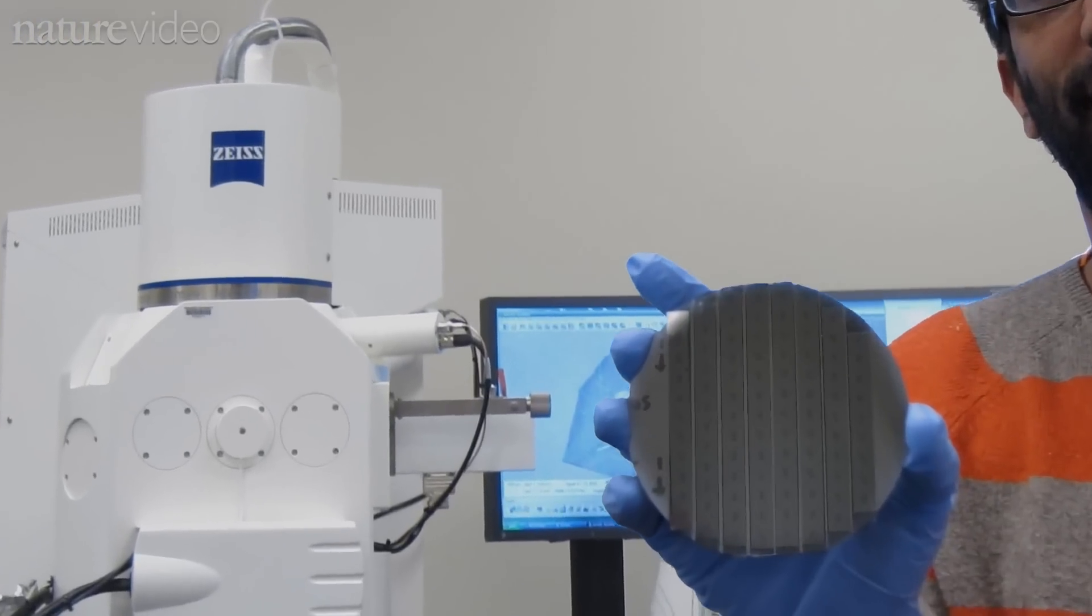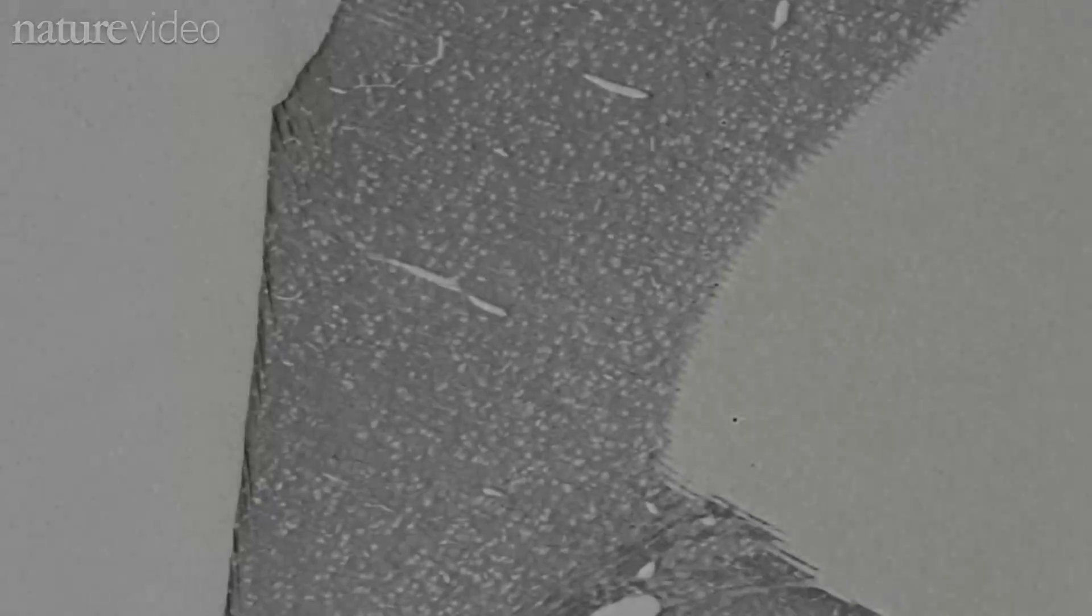To do the study, a Harvard team used a machine to cut a piece of mouse cortex into thousands of wafer-thin slices, which they stuck on a ribbon and scanned.